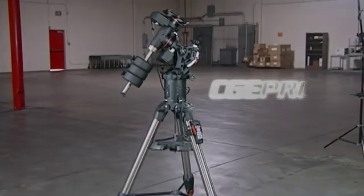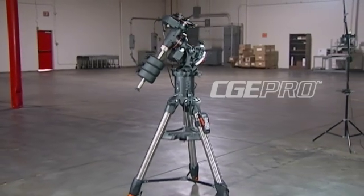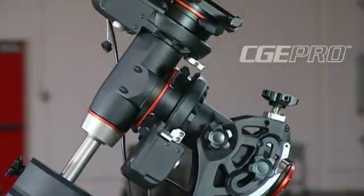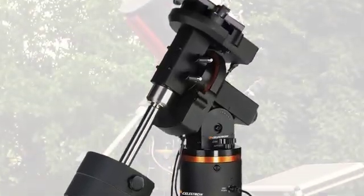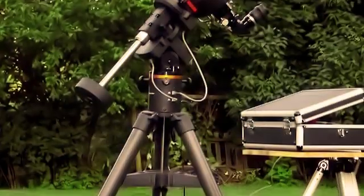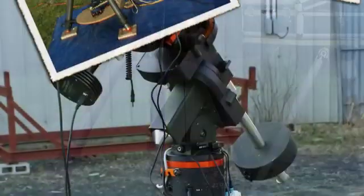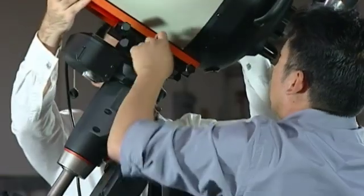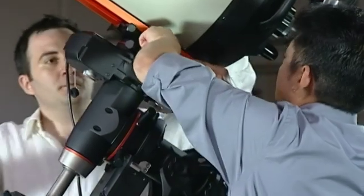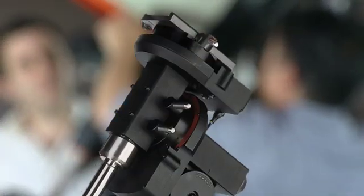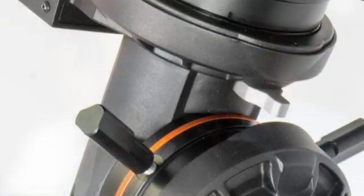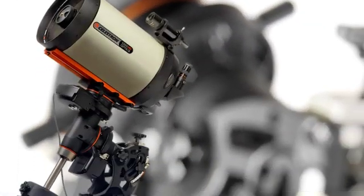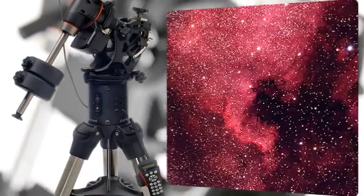Celestron is proud to introduce the CGE Pro, the latest offering in German equatorial mounts. Celestron's original CGE mount has long been the favored choice of astronomy buffs and astrophotographers because of its stability, portability and accuracy. While designing the new CGE Pro German equatorial mount, Celestron engineers built on their experience with the previous CGE model to deliver a brand new platform packed with features geared towards serious observers and astrophotographers.